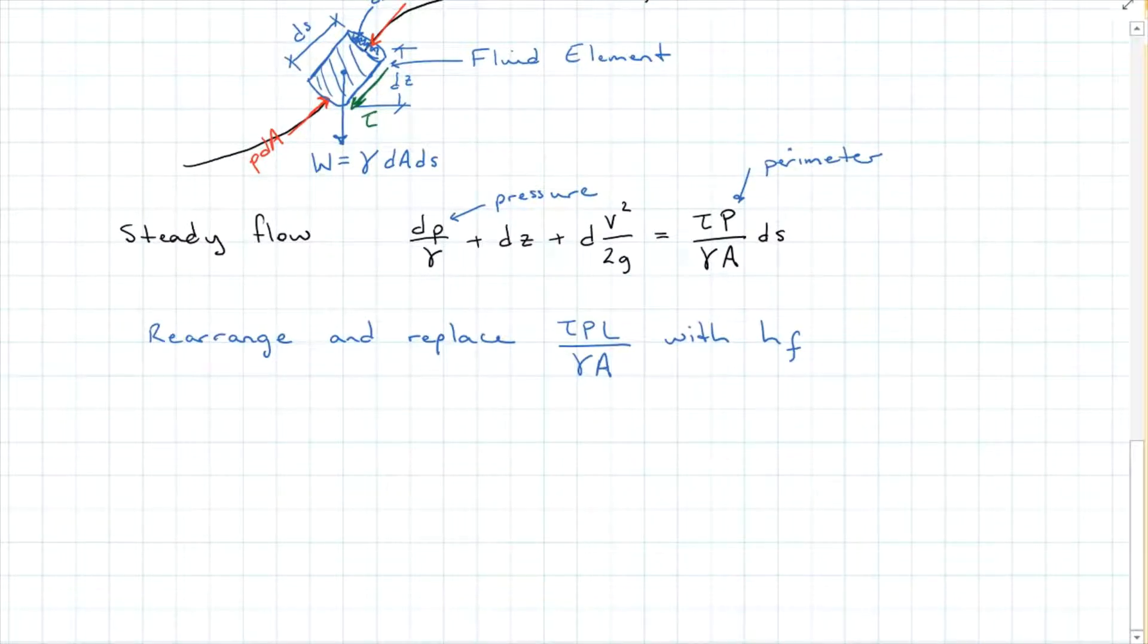Now if I rearrange this equation and replace that shear force with HF, which represents head loss due to friction, and this is over a specific length, so that ds has now changed to an L length over a specified time.